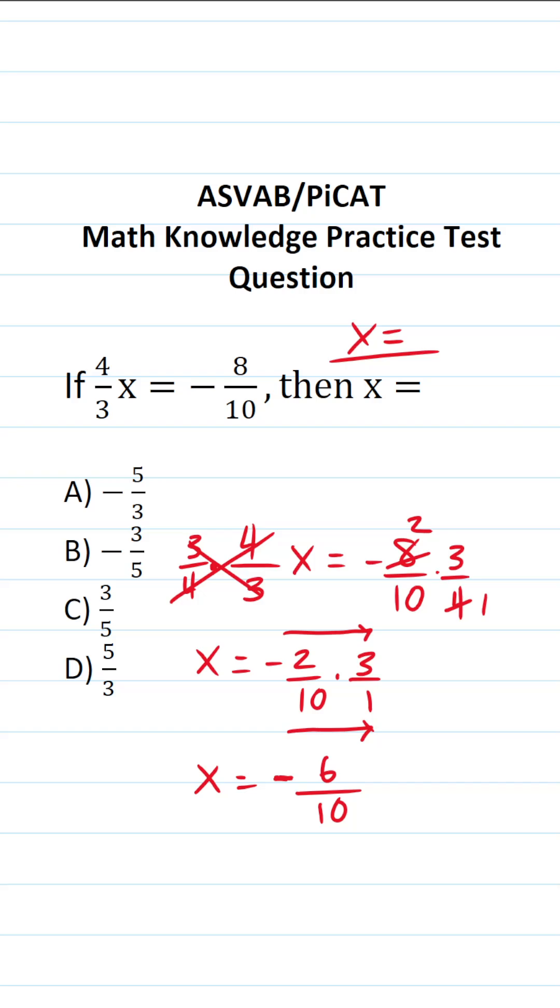This isn't an answer choice because we can reduce this. Six and ten have a common factor of two. So we can reduce this by a factor of two. Six divided by two is three. Ten divided by two is five.